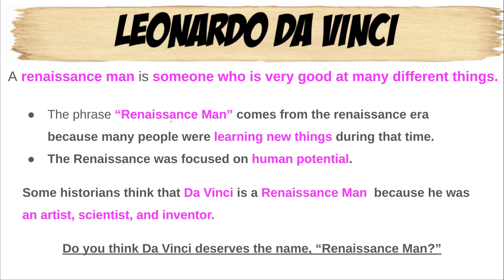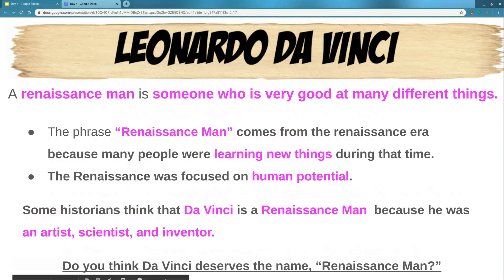Remember, Renaissance is the French word meaning 'rebirth.' People during the Renaissance were learning many new things — we were coming out of the dark ages, the medieval ages, where people didn't learn or know very much. People were focusing on human potential, meaning they were trying to be the best they could be by learning as many things as they could. Da Vinci learned about art — he was drawing, painting, doing science, and inventing things.